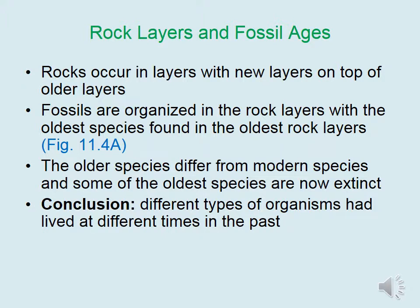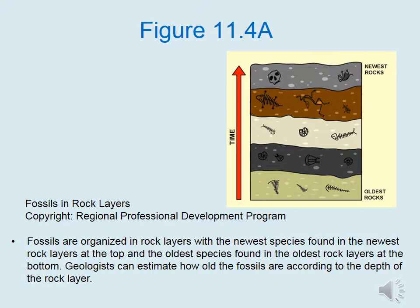As the earth developed, rock layers were laid down with new layers on top of older layers. Fossils are organized in rock layers with the oldest species found in the oldest rock layers at the bottom. The older species differ from modern species, and some of the oldest species are now extinct. This leads to the conclusion that different types of organisms lived at different times in the past, and that organisms change over time. The newest species are found in the newest rock layers at the top.